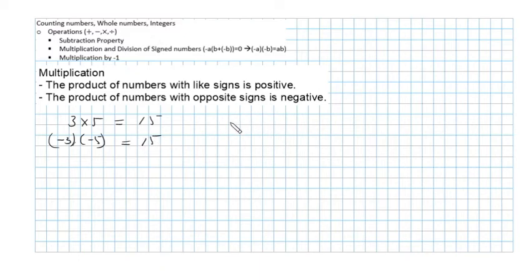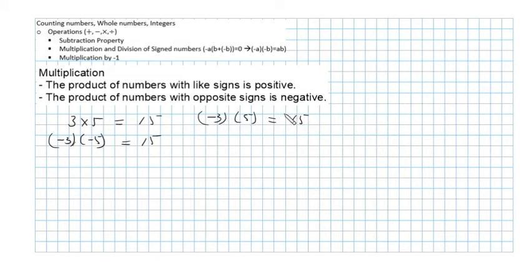If the signs are different, it doesn't matter which one — I can have minus 3 times 5, and since these signs are different, the answer will be negative: minus 15. And if I have 3 times a minus 5, it's the same thing: minus 15.